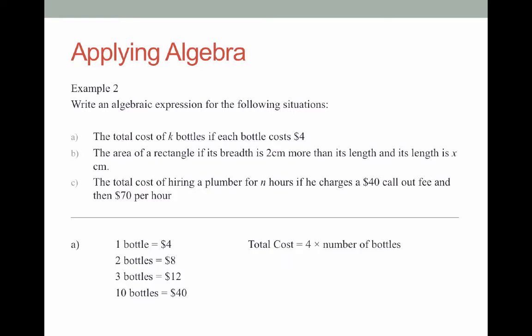Well the question tells you that you have K bottles. So the cost of K bottles will be four lots of K or we might shorten it to 4K. This is what we talk about when we're applying algebra.